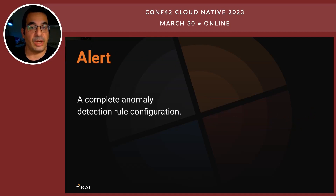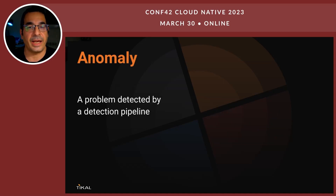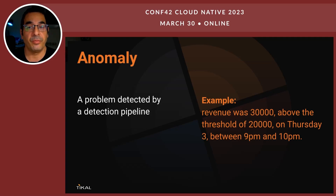Using this alert template, we can create an alert. An alert is an anomaly detection rule configuration. For example, create an anomaly if revenue — our metric — is bigger than $20,000, and check every hour. The anomaly would occur if this alert is triggered. At a certain time, when querying the data, we would see that revenue is $30,000, which is above the threshold of $20,000, on Thursday the 3rd between 9 p.m. and 10 p.m.